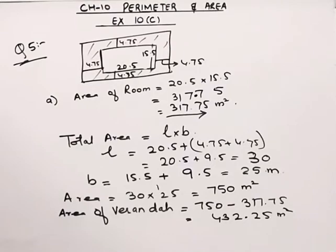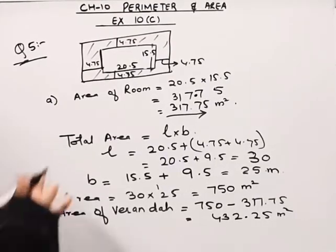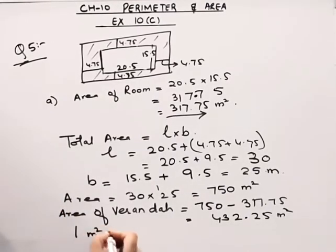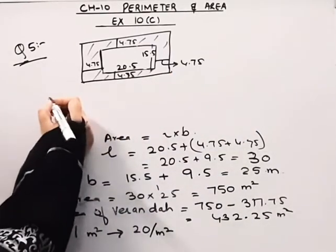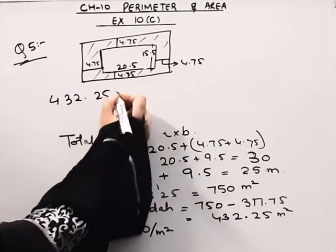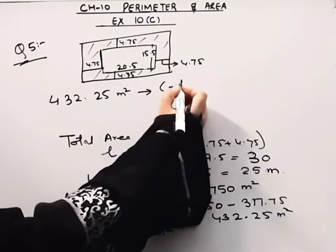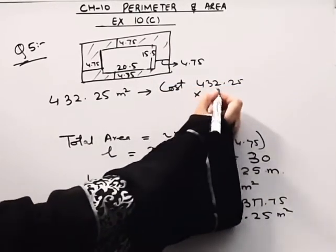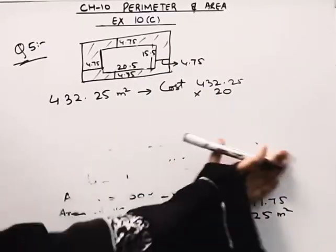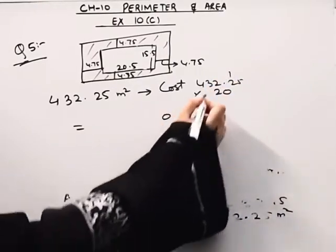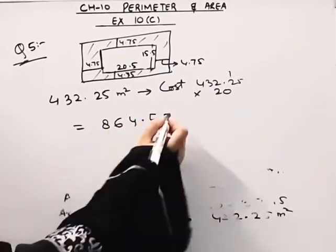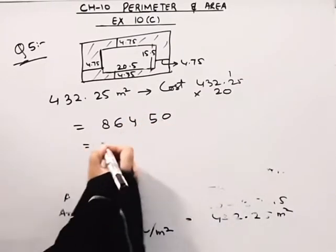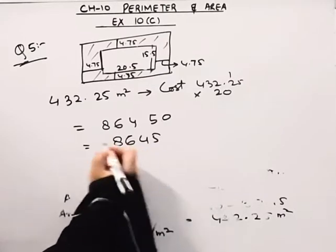Now we have to find out the second part: the cost of putting tiles in the veranda. The rate is rupees 20 per meter square. So the cost will be 432.25 into 20 rupees. Multiplying: 25's are 10, 22's are 4, carrying through — this comes out to be rupees 8645.